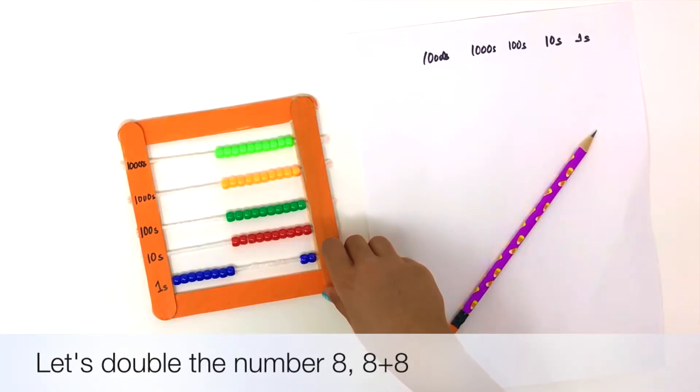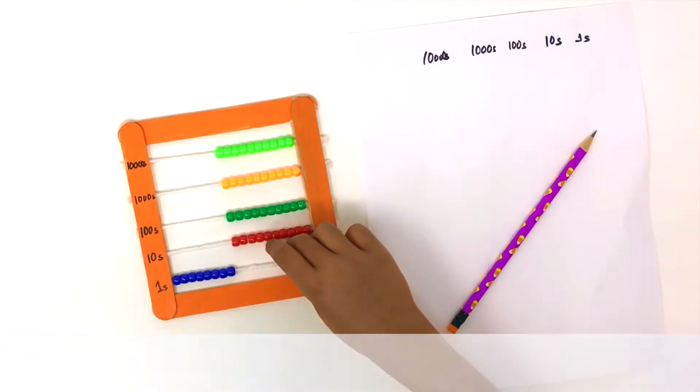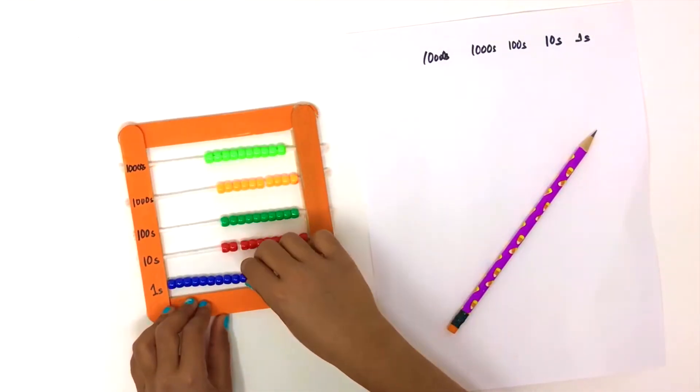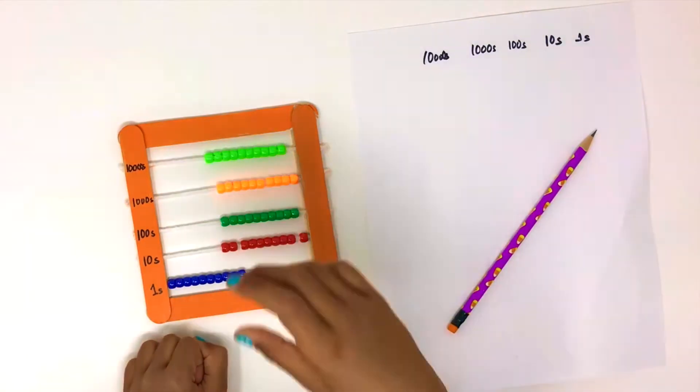Now let's come to the tricky part. We are going to add 8 plus 8. We already have 8 on the left. Now we are going to add 8 more beads. So let's start counting. One, two. Oops, see we ran out of beads in the bottom row.